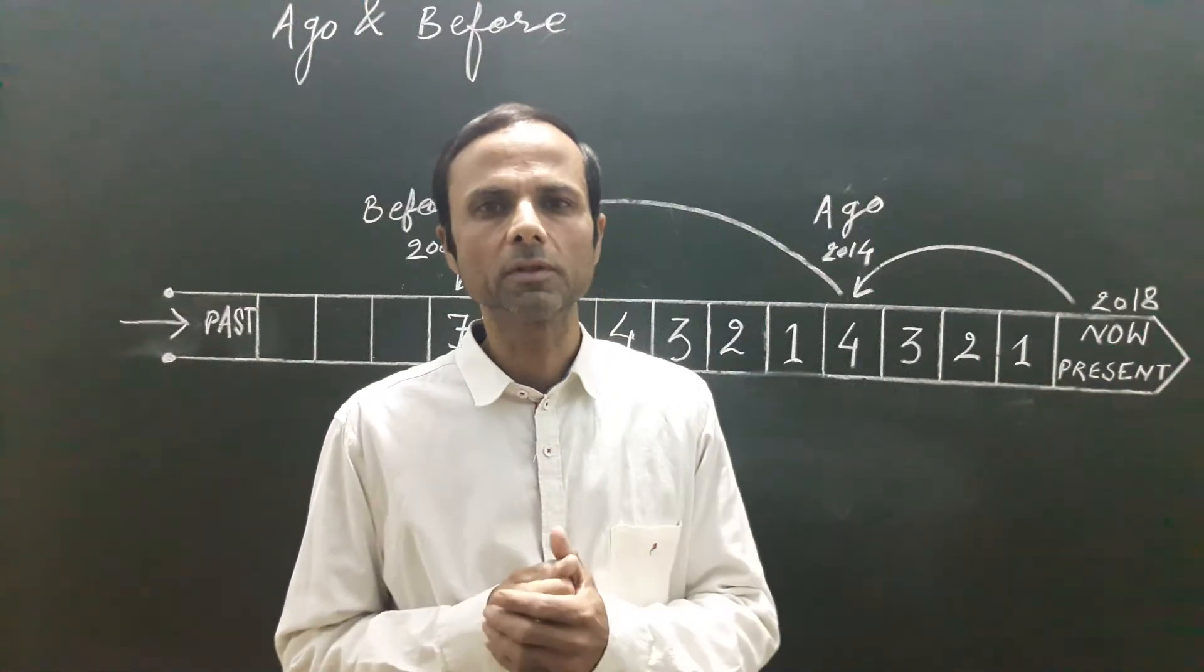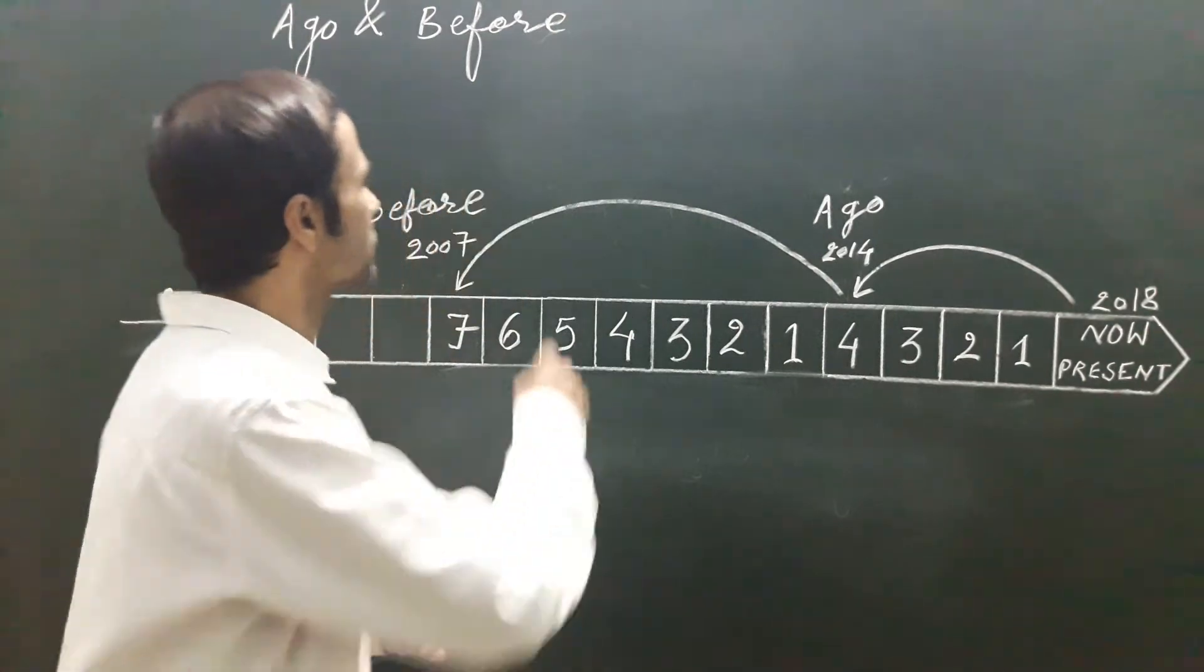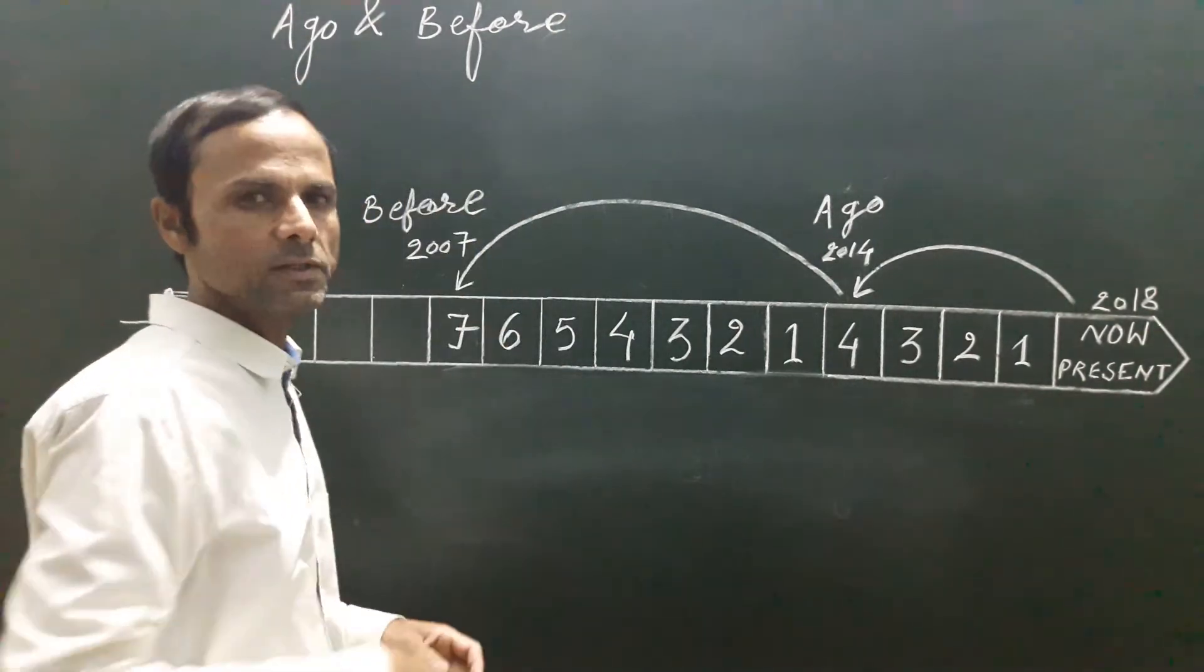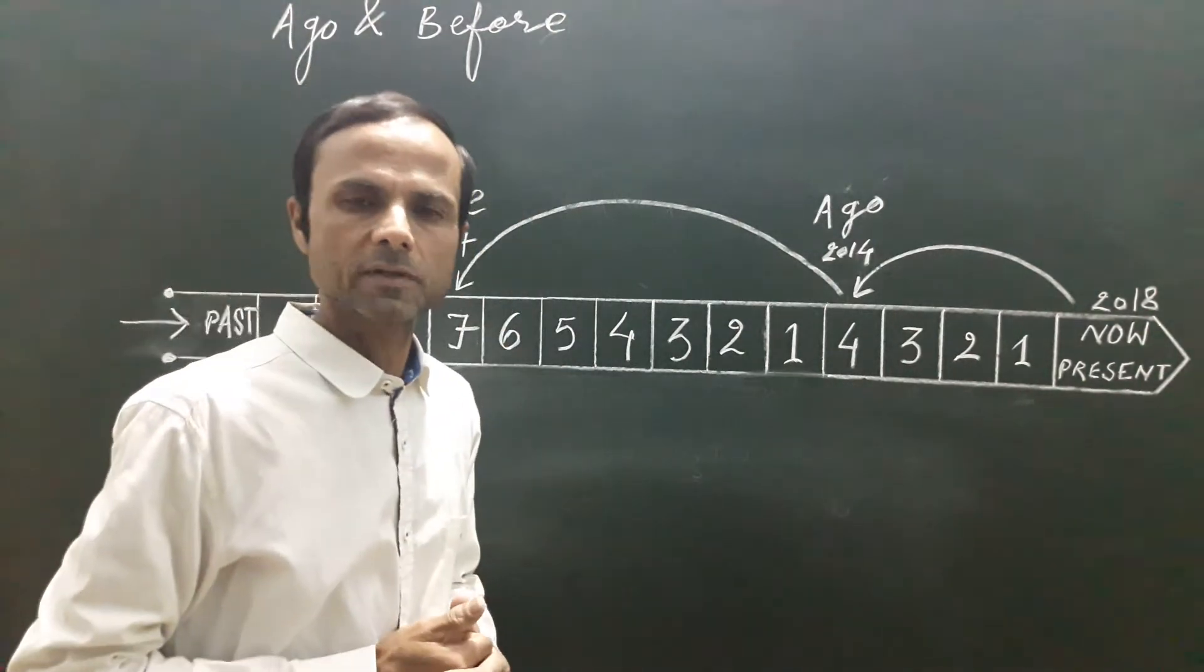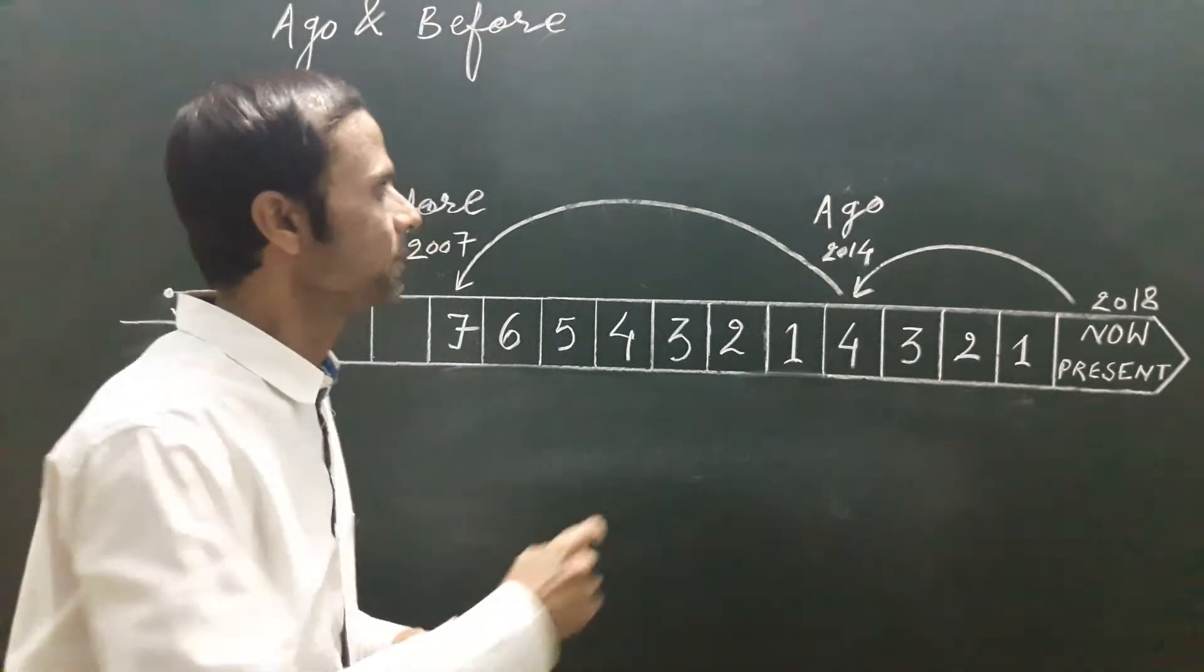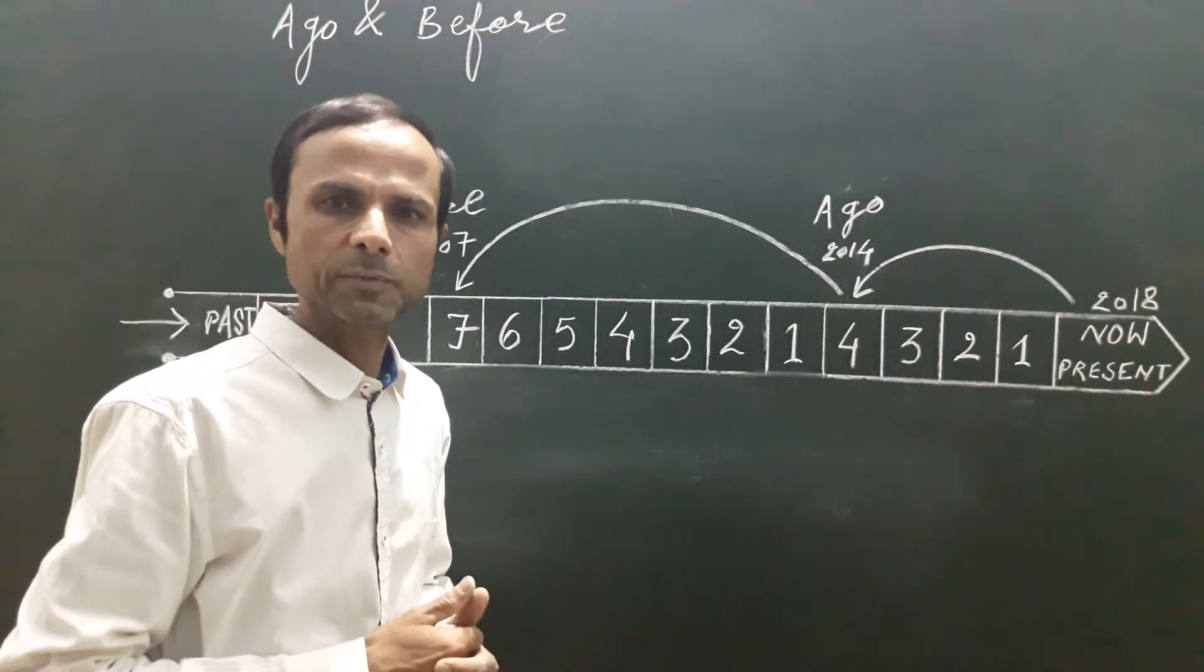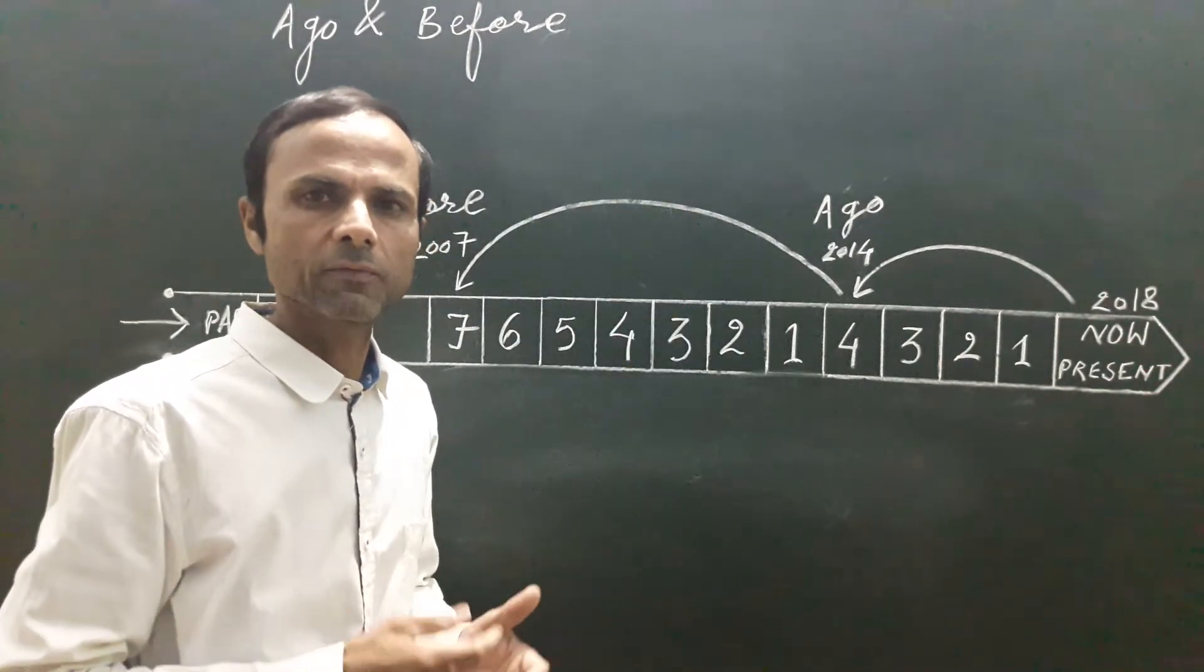Today we are going to touch upon the difference between ago and before. We use ago with a past tense plus time expression to count back from present to past. But we use before with past perfect tense, time expression to count back from past to past.